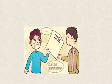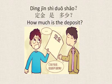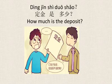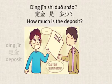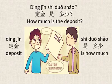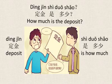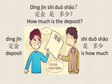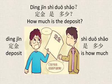An important thing you need to know is the deposit. So how do I ask how much is the deposit? You can ask: 定金是多少? 定金 is the deposit. 是多少 is 'how much'. 定金是多少? — How much is the deposit? The answer: 五百块.